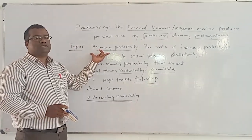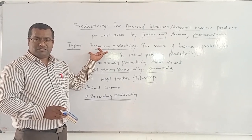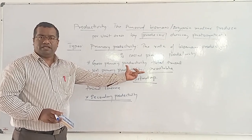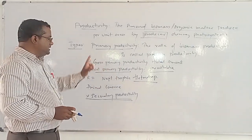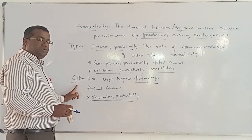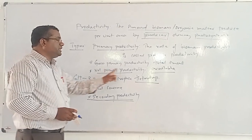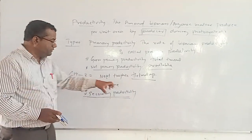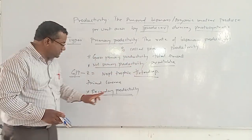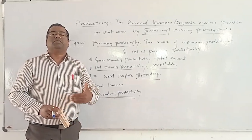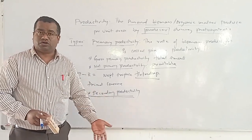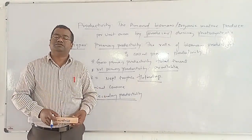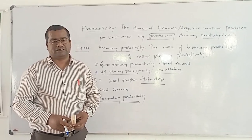Primary productivity is the rate of biomass production or organic matter at a given area by producers during the process of photosynthesis. Gross primary productivity is the total amount of biomass production. Plants utilize some energy as respiration, so GPP minus R gives NPP — net primary productivity — which is the net available energy for the next trophic level. Heterotrophs consume this available energy from plants and grow, which is secondary productivity. In an ecosystem, the production of biomass is started by autotrophs — plants — and ultimately plants are the source of energy to the ecosystem. Today this much is enough; the remaining ecological points will continue in our next class.